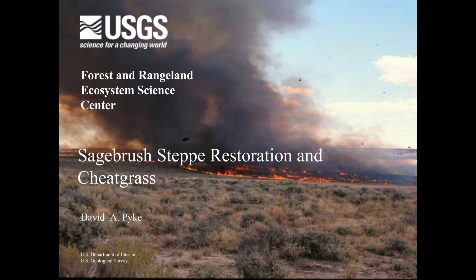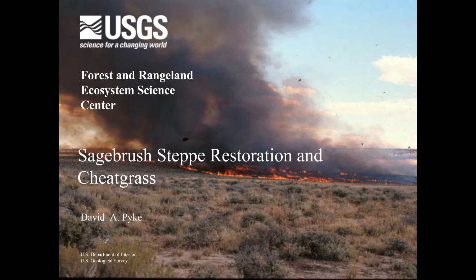I've always felt like in the past we've kind of taken a shotgun approach to revegetation — we shoot this big wide pattern and hope that we hit something. Oftentimes I don't know that we truly understand what has gone wrong within the ecosystem. Is it merely that we've lost some plants and all we need to do is reintroduce them? Or have introductions of invasive species changed the ecological processes in these systems? If so, we may need to restore some of those processes at the same time, or maybe even before we start doing restoration or revegetation work.